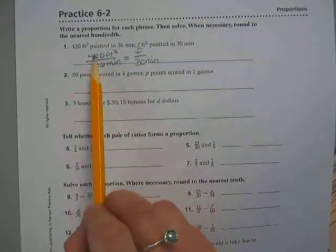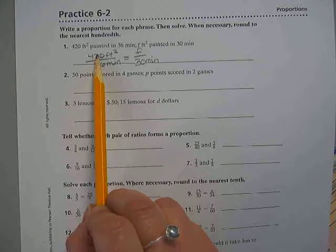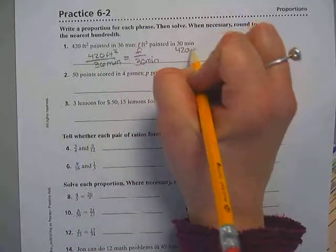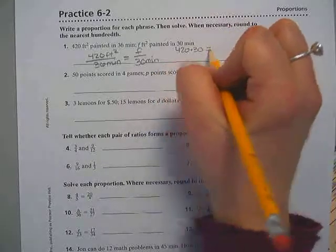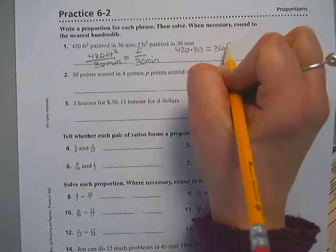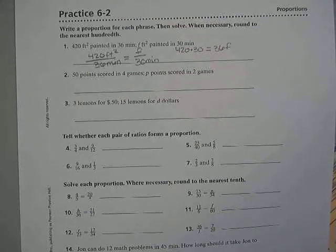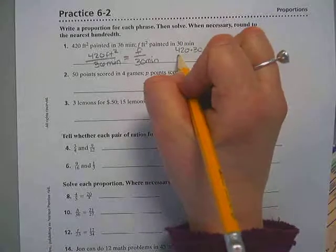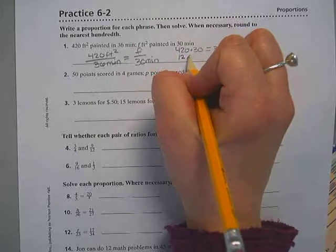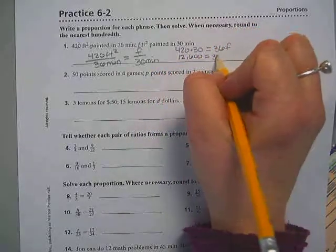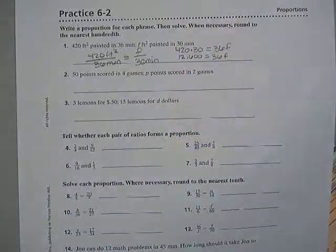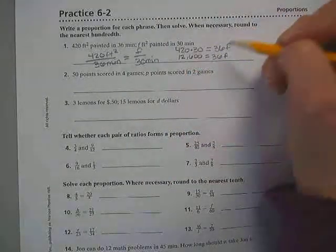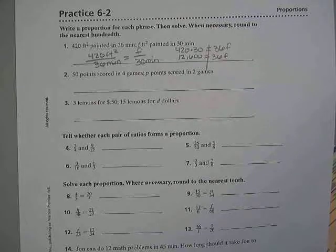So now using our cross products, we're going to do 420 times 30 has to equal 36 times F. And like I said, you're welcome to use calculators on this. 420 times 30 is 12,600 equals 36F. Line down the equal sign.